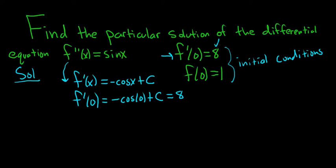Cosine of 0 is 1, so we get -1 + C = 8. Adding 1 to both sides, we get C = 9.